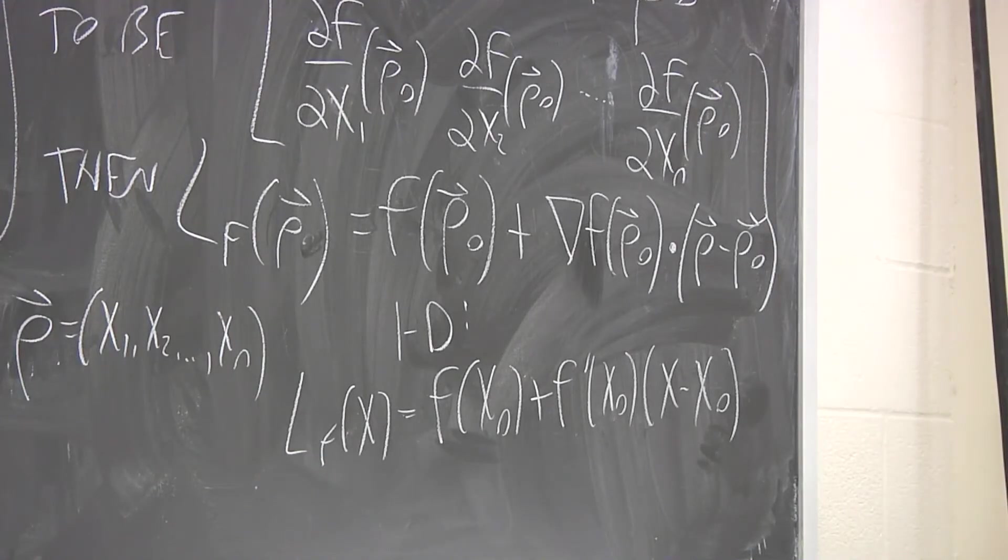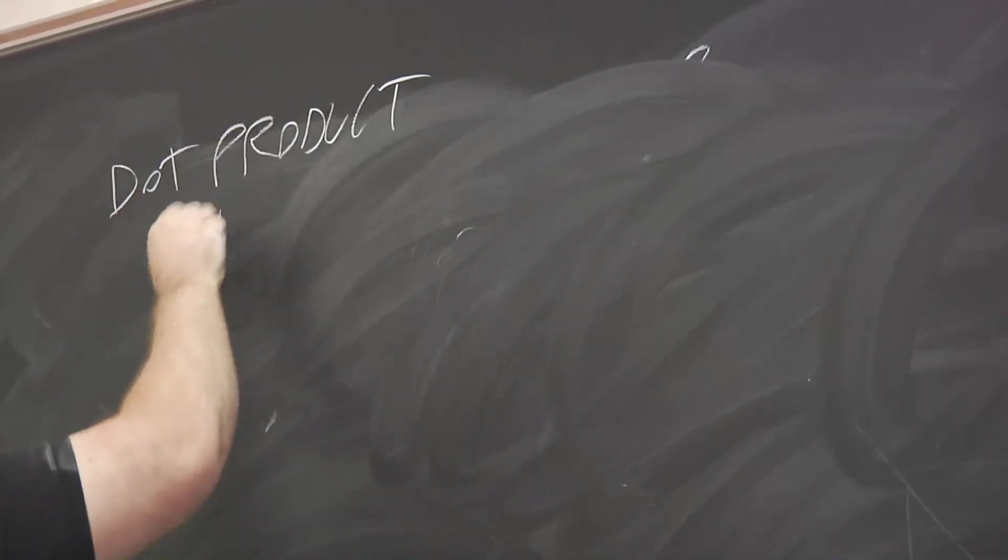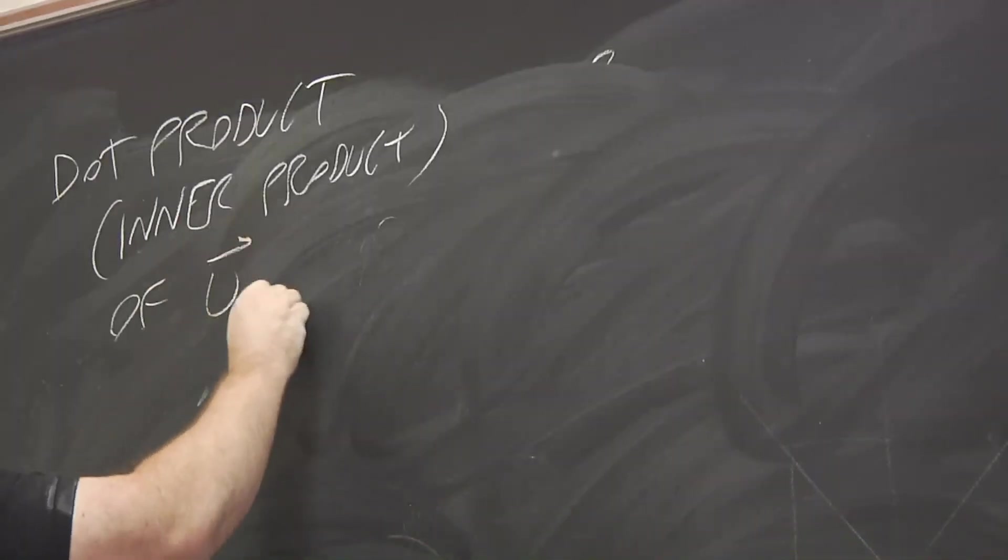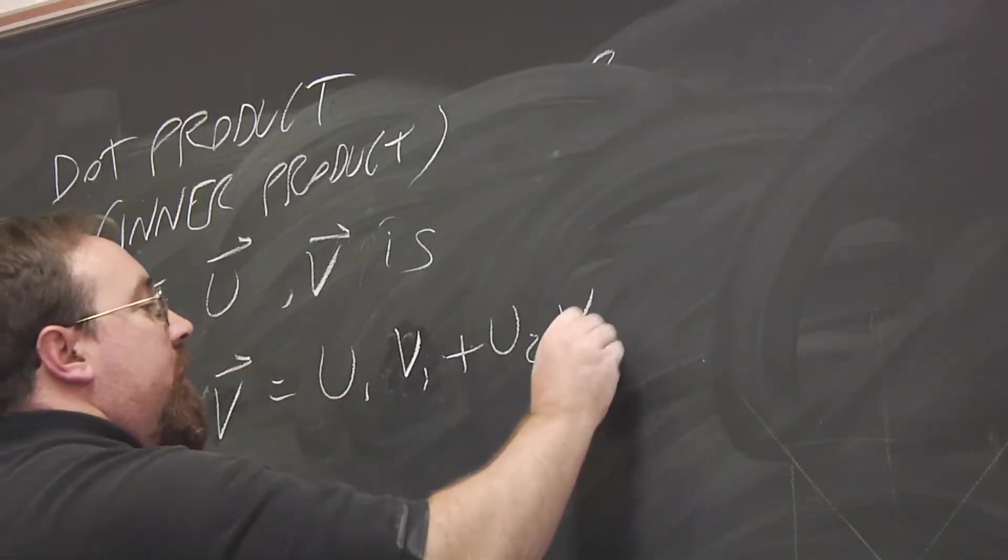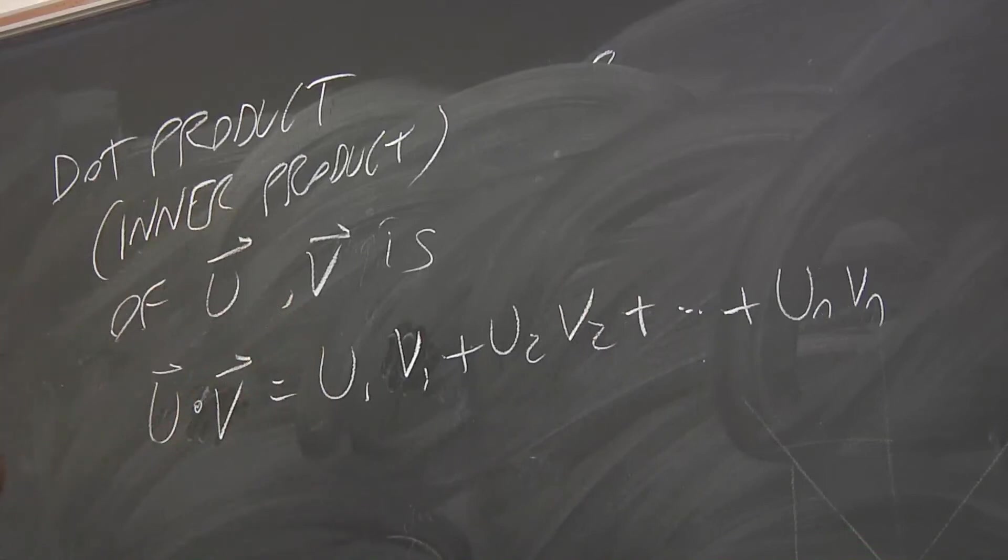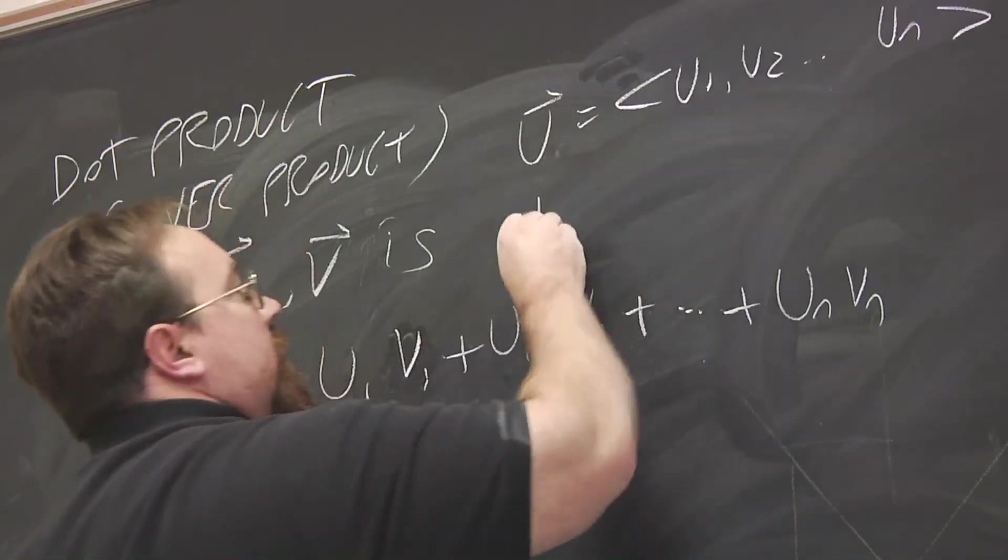So just to refresh everyone's memory, make sure we're on the same page. Dot product, also known as the inner product, of two vectors, u and v, is written this way. So you take corresponding components and you multiply them. So u₁v₁, u₂v₂. So these are the components of u, these are the components of v. So we multiply corresponding components and add them all up.